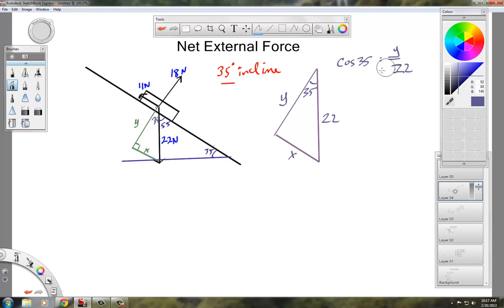That was a 22 gone wild there. Let's do that again. 22. And then the sine of 35 will be opposite over hypotenuse. So that is X over 22.